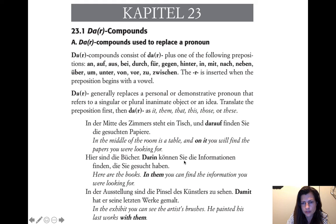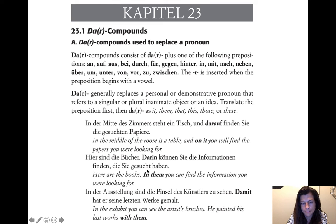'Hier sind die Bücher. Darin können sie die Informationen finden, die sie gesucht haben.' Here are the books. In them — 'darin' — you can find the information you were looking for. It doesn't matter whether it's singular or plural; the form is just 'darin,' referring to the thing just mentioned. Then: 'In der Ausstellung sind die Pinsel des Künstlers zu sehen. Damit hat er seine letzten Werke gemalt.' With them — 'damit' — he painted his last works. The form doesn't change whether it means 'with it' or 'with them.'